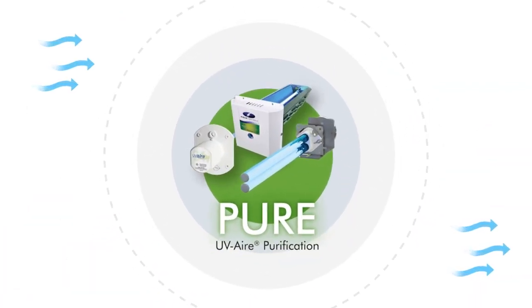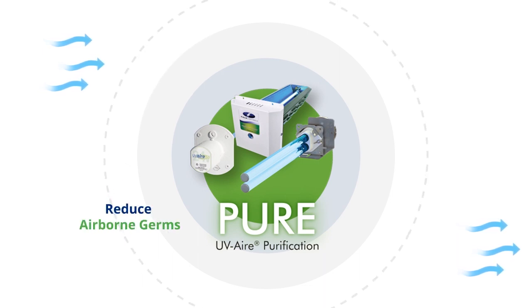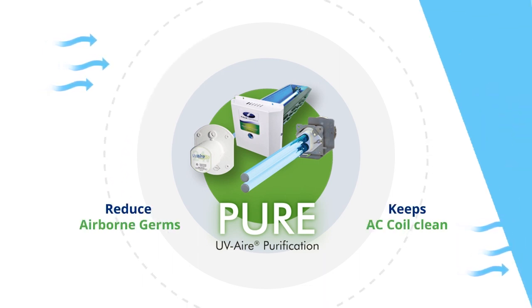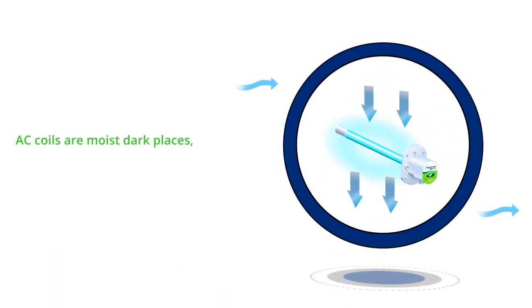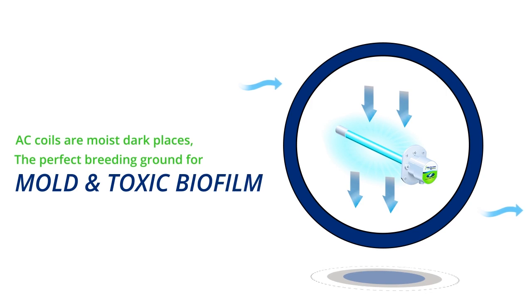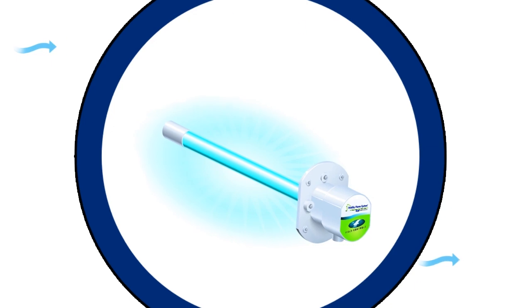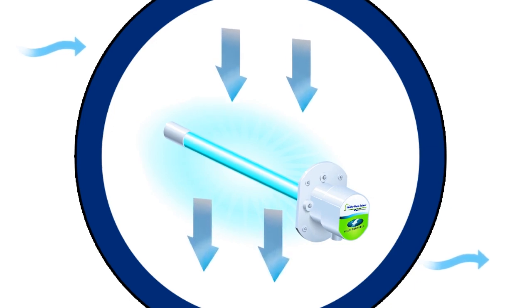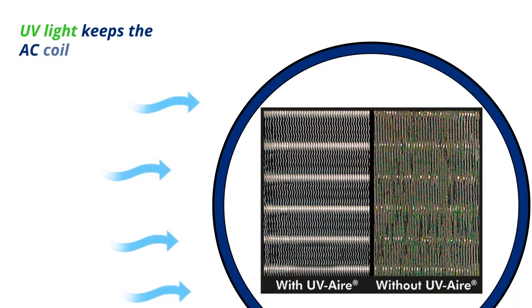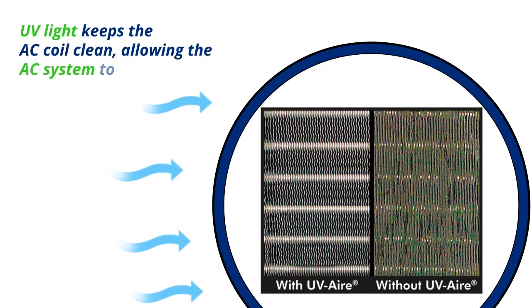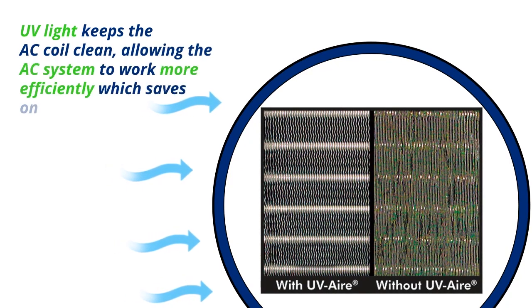While Field Controls UV lamp air purifiers reduce airborne germs, they also keep AC coils clean. AC coils are in most dark places, the perfect breeding ground for mold and toxic biofilm that releases germs into the air each time the system cycles. When a UV lamp is placed near the AC coil, it keeps the coil clean, allowing the AC system to run efficiently, which saves on energy costs, reduces maintenance and extends the life of the equipment.